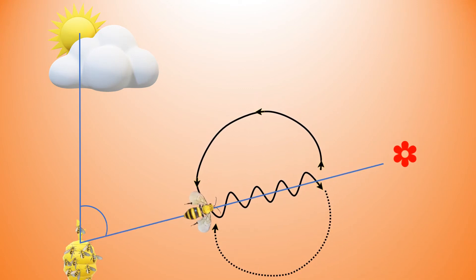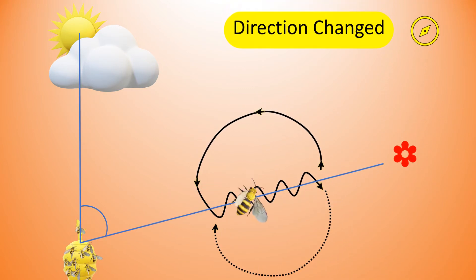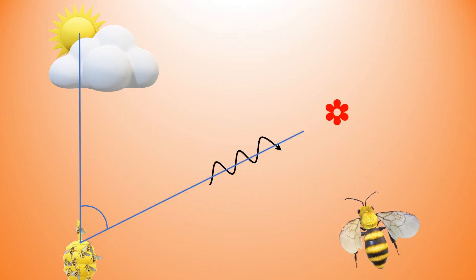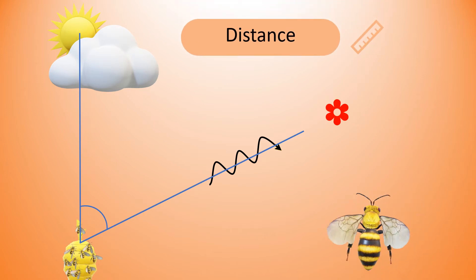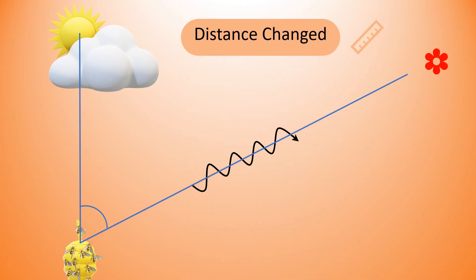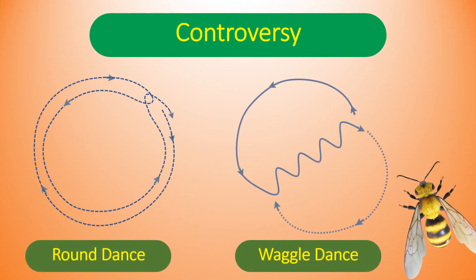Distance is encoded in the duration of our waggle run, and direction is encoded in the angle of our body relative to the sun. If we waggle upward, we are signaling that the food source is towards the sun. If we waggle downward, it signals that the food source is away from the sun. This is how we communicate with each other about the distance, direction, and quality of nectar.